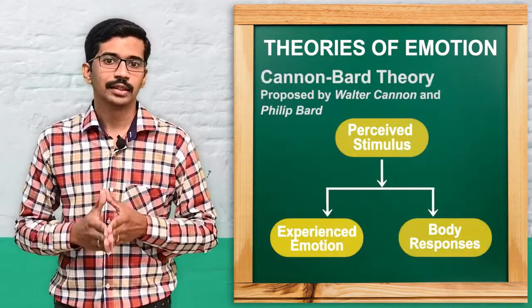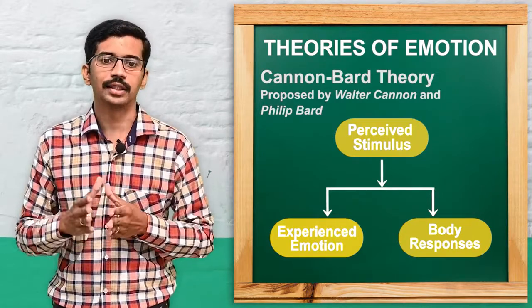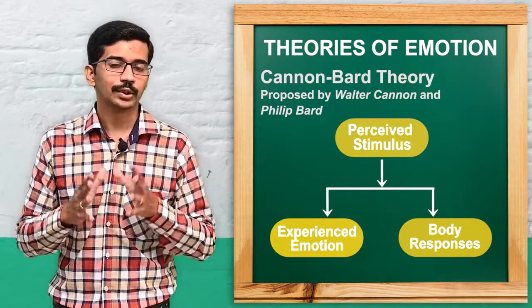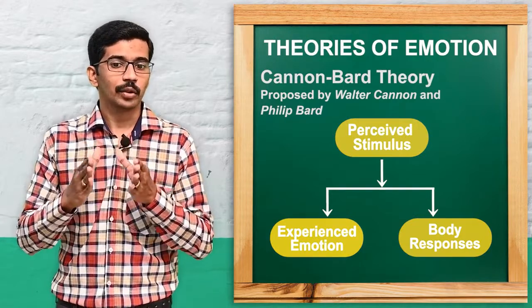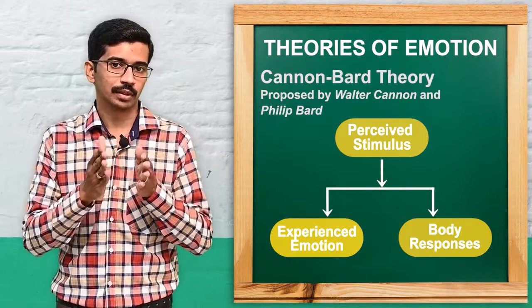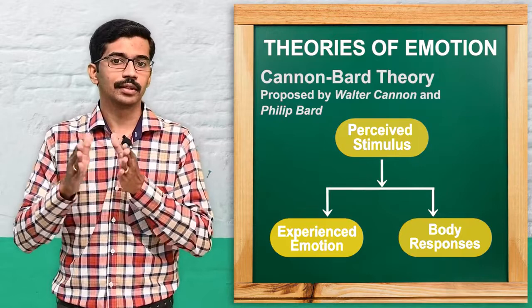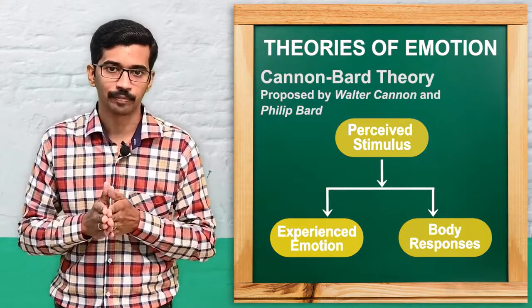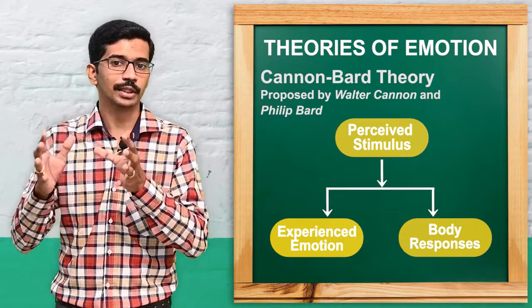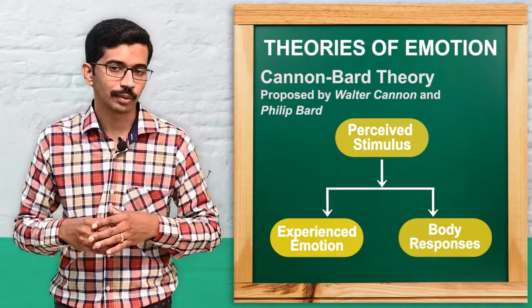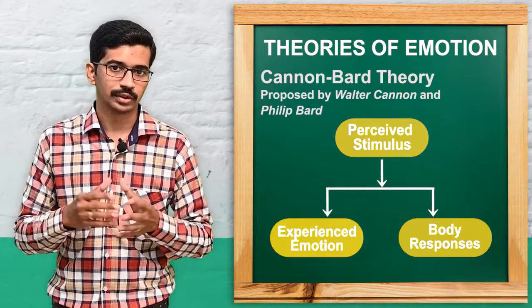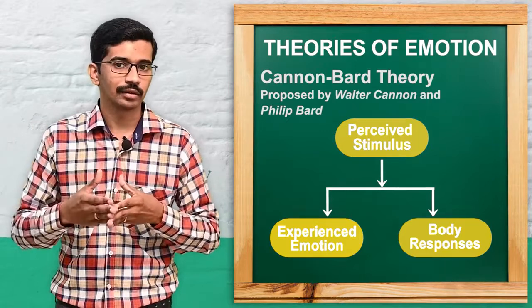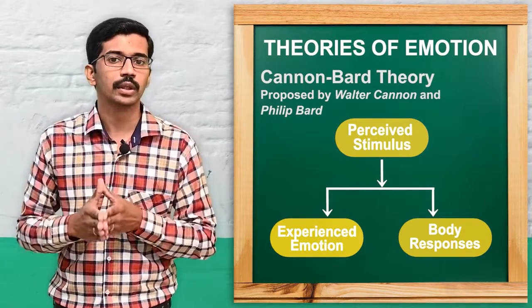The next theory is the Cannon-Bard theory, proposed by Walter Cannon and Philip Bard. According to them, the physiological responses — body arousal — and the experience of emotion are independent of each other; both happen at the same time. That means, in the same situation that produces emotion, we simultaneously feel the physiological responses and feel the emotion. For example, if we see a snake, at the same time we get shivering and we experience fear — according to the Cannon-Bard theory.